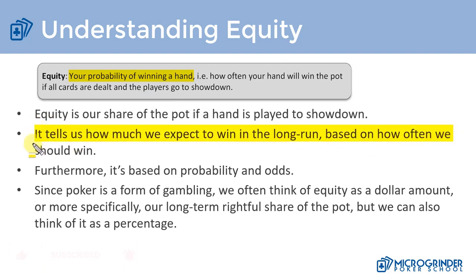For example, ace king versus pocket queens: the equity of pocket queens is going to be 55 percent — they expect to win 55 percent of the time — and ace king is going to be 45 percent. If we plug that into an equity calculator, that's what it's going to tell us. It's really based on the probability and the odds of winning a hand.